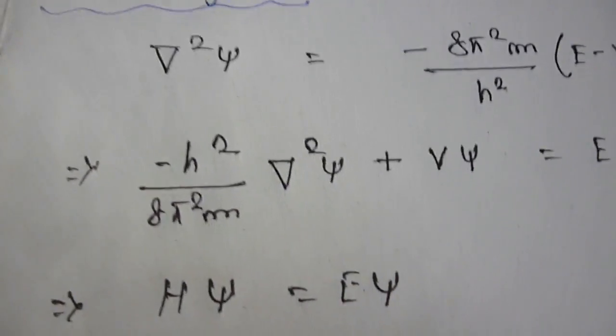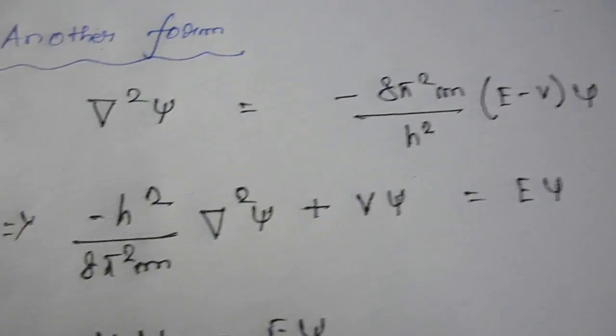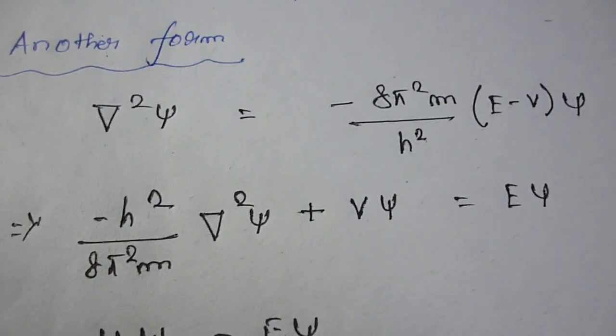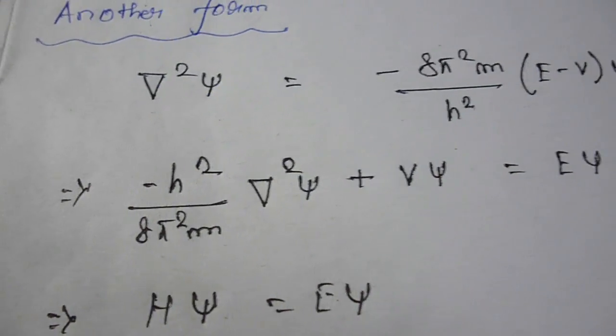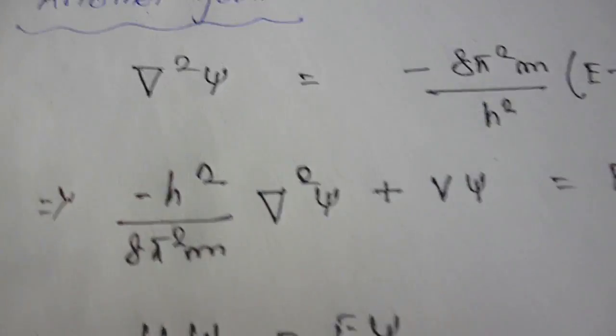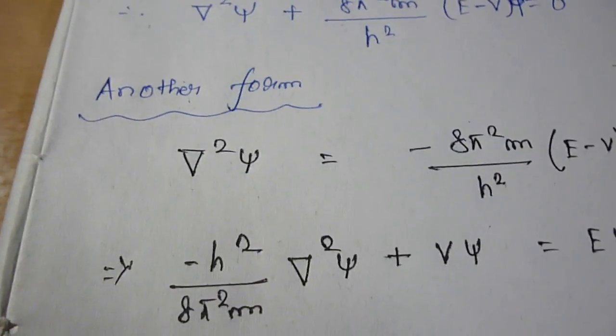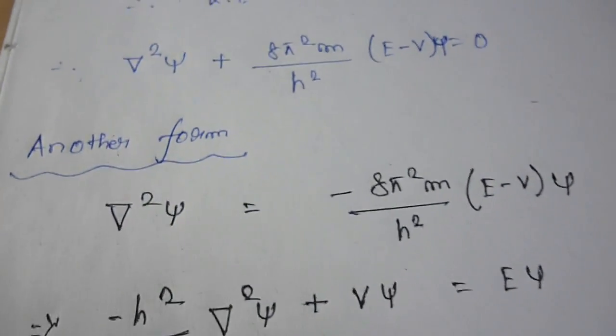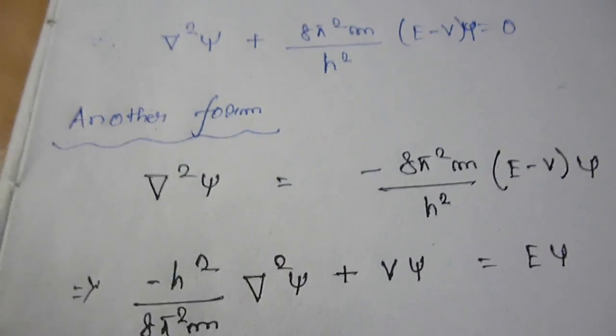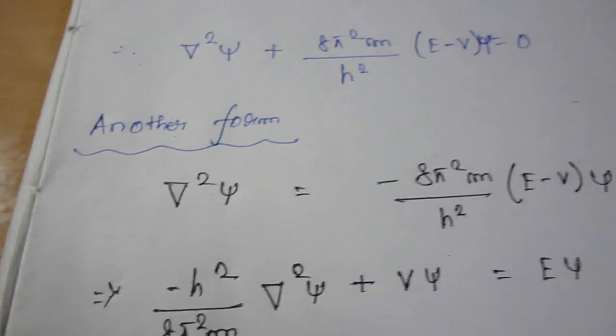Now what are the significance of Schrodinger wave equations? Schrodinger wave equation doesn't contain time. If you see that in this entire equation we have no representation of time. And what does this help us?